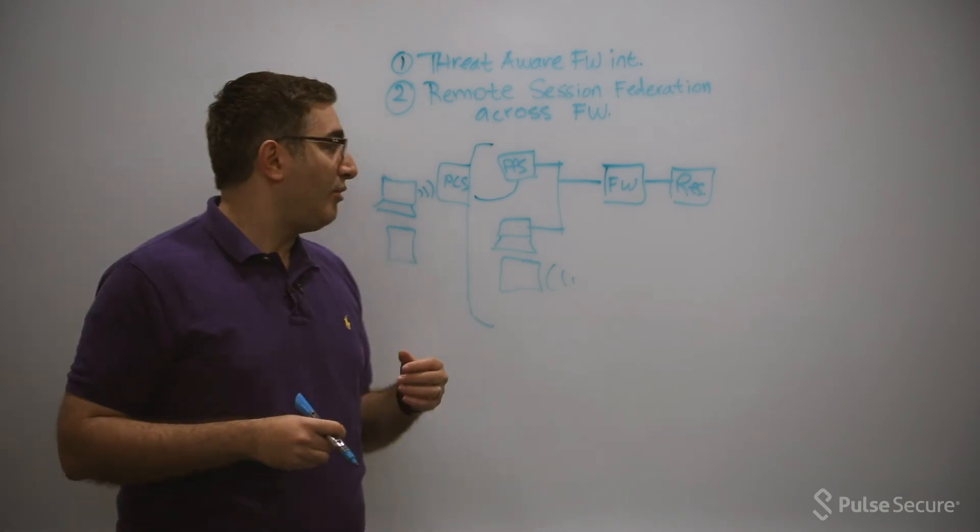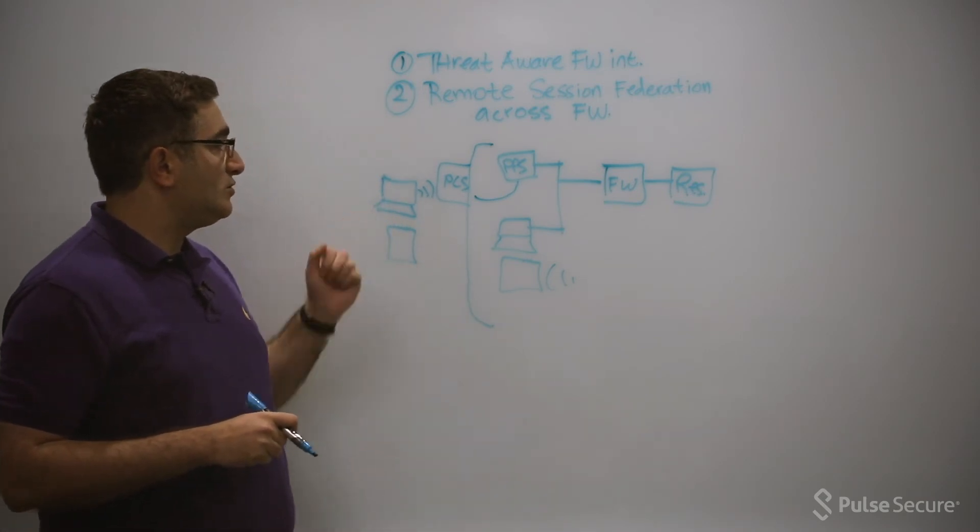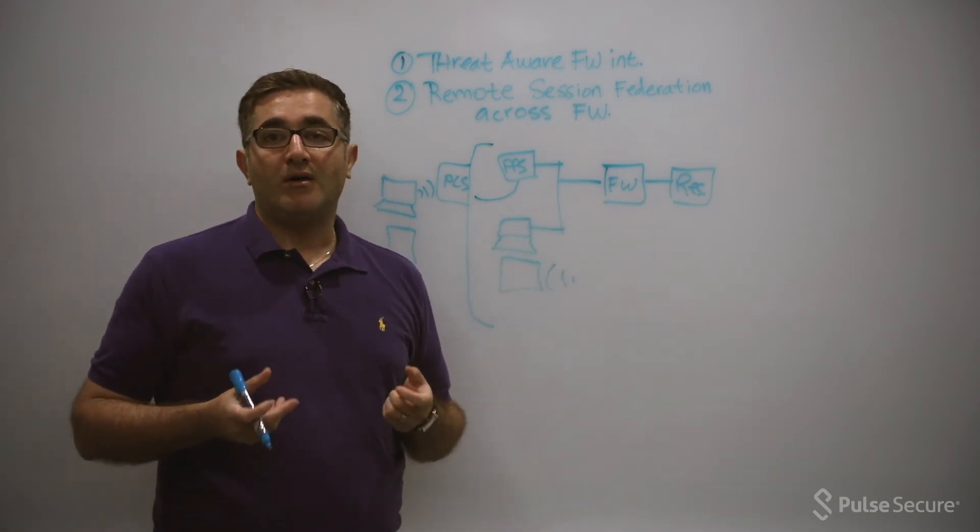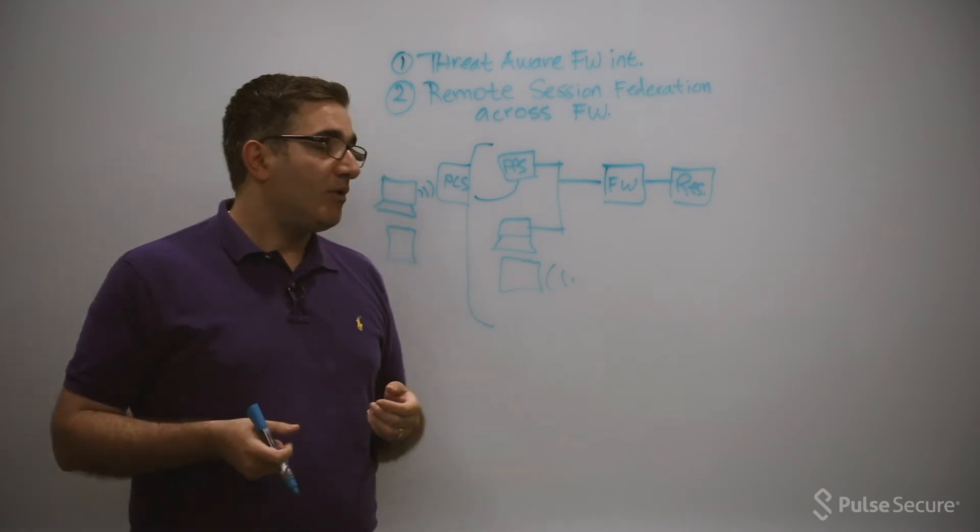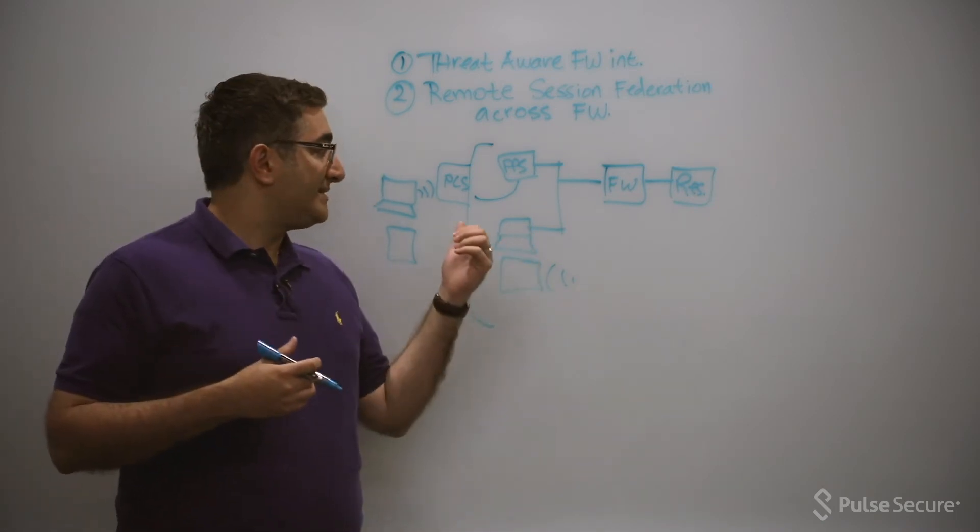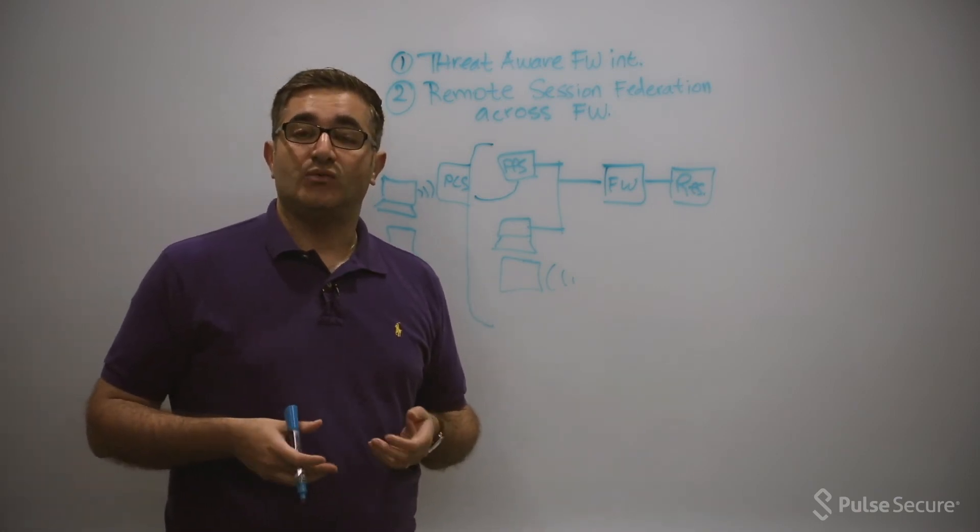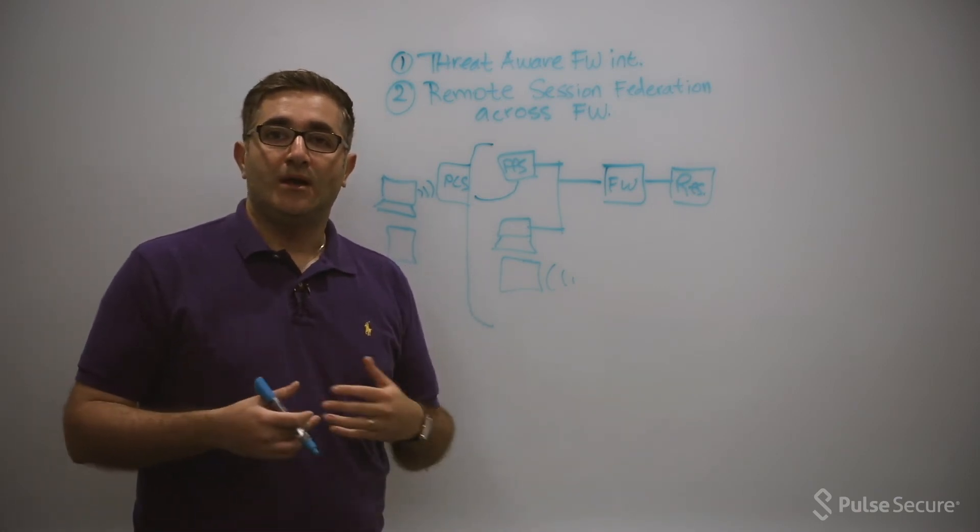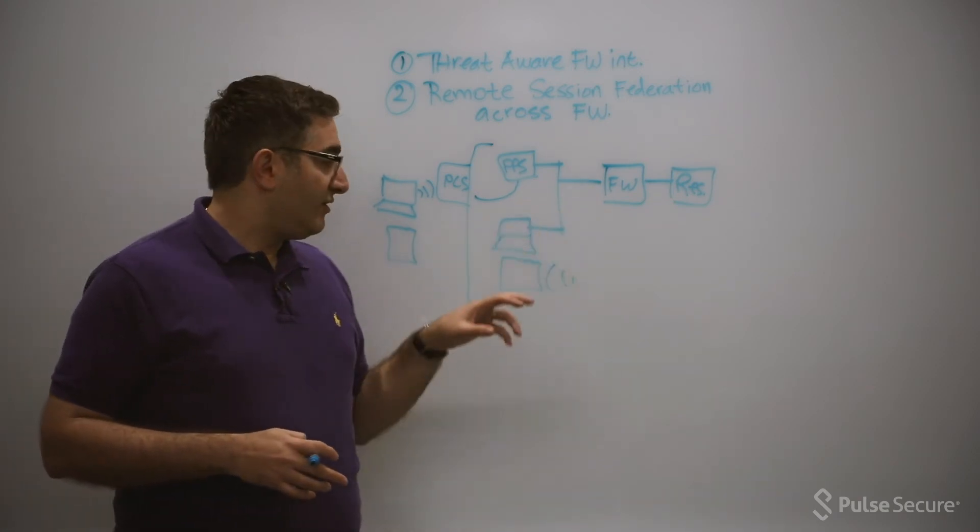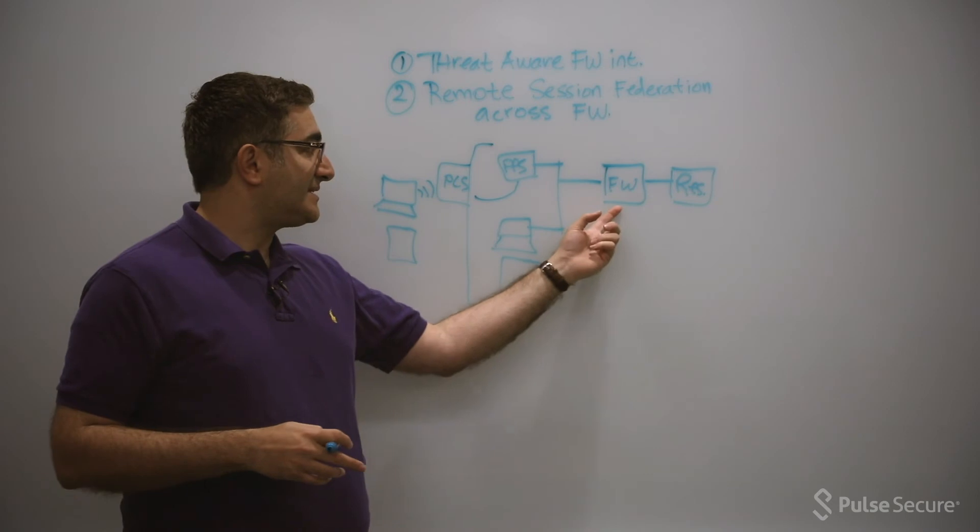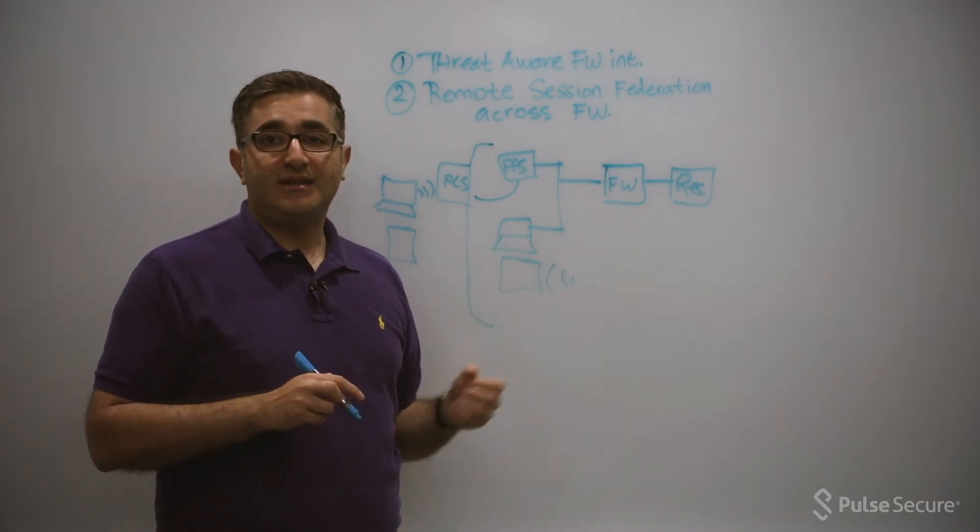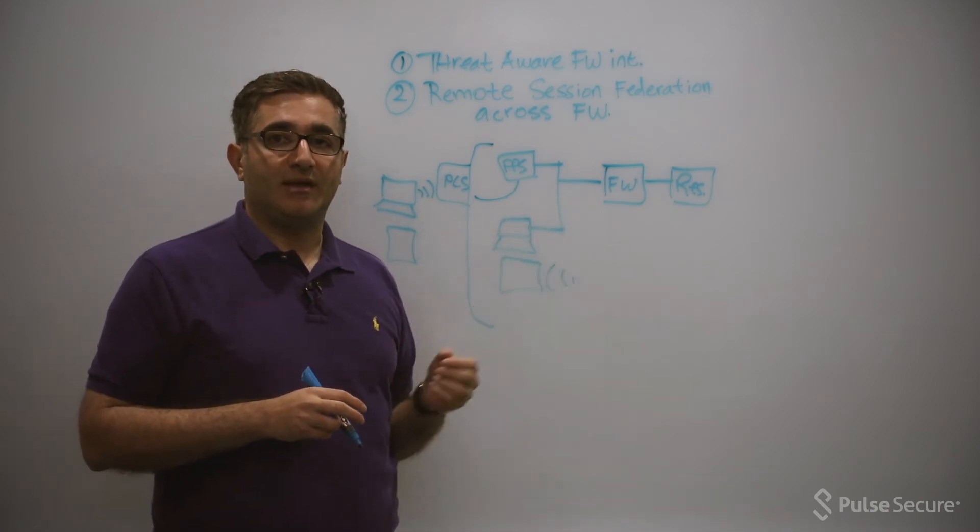And the reason why that's important is as soon as this user tries to go to a protected resource behind the firewall, the firewall wants contextual information. It wants to know who the user is, what group are they in, what the device compliant state is, what the device type is. There's a lot of things related to role-based access control that the firewall wants to know. For an internal user, when they're accessing something in here, there's a session that PPS has, and it updates the auth table.